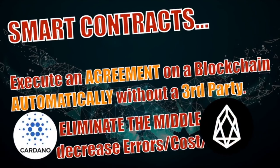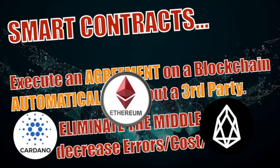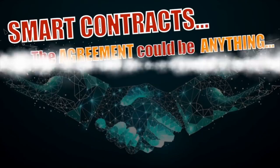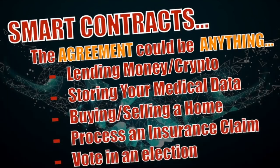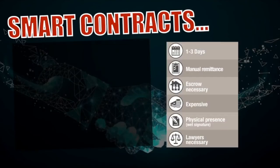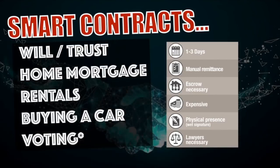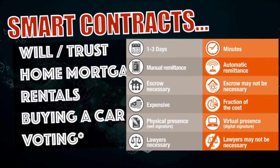Smart contracts are a little bit different. You can execute an agreement on a blockchain automatically without a third party, essentially eliminating the middleman, which decreases errors, cost, and time. When we think about smart contracts, we think Cardano, EOS, but it's mostly Ethereum right now — the main player. The agreement could be anything: lending money or crypto, storing medical data, buying or selling a home, processing an insurance claim, voting in an election. Instead of taking one to three days, it only takes minutes; instead of manual remittance, it's automatic and taken off the blockchain. Escrow may not be necessary, it's a fraction of the cost, you don't need physical presence — just a digital signature — and lawyers may not be necessary. You're saving a ton of time and money.